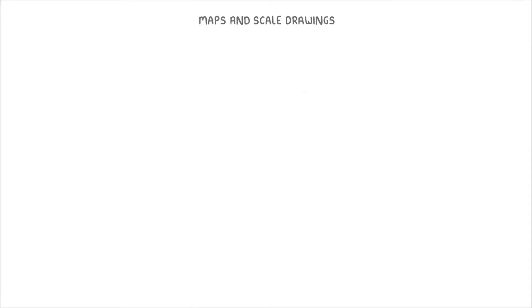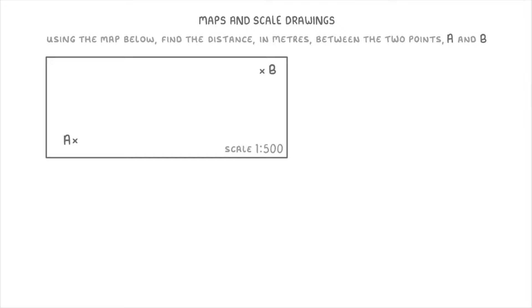Now that we've covered the basics, let's have a go at a couple of exam questions. In this question, we're being asked to use the map to find the distance between the two points A and B. If we look at our map, we can see the two points they're talking about, and we can also see the scale in the bottom right corner, which says 1 to 500, meaning our diagram is 500 times smaller than in real life. What I like to do is change the 1 to 500 to 1 centimetre equals 500 centimetres, because it means exactly the same thing but it'll be a bit easier to work with later.